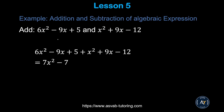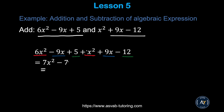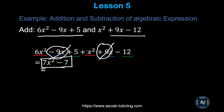Next we'll learn how to simplify algebraic expressions — adding and subtracting. When adding, you need to combine the like terms. Here you have two expressions: identify x² terms, x terms, and constants as like terms. 6x² plus 1x² gives you 7x². Then 9x minus 9x cancels out to zero. And 5 minus 12 gives you minus 7. So the answer is 7x² − 7.